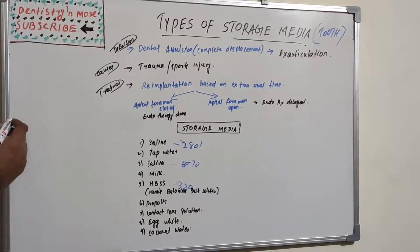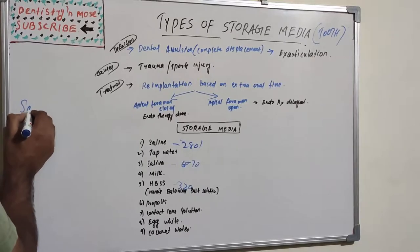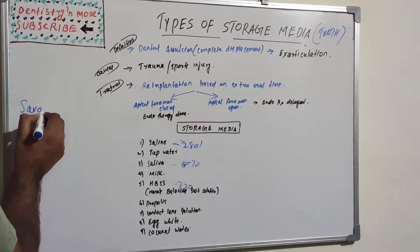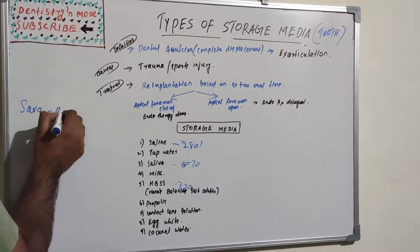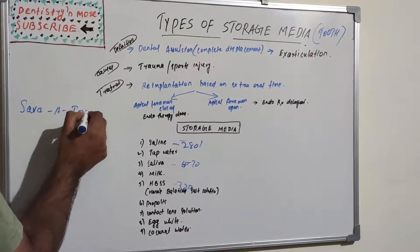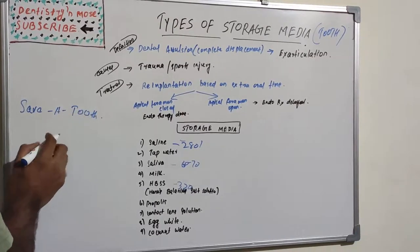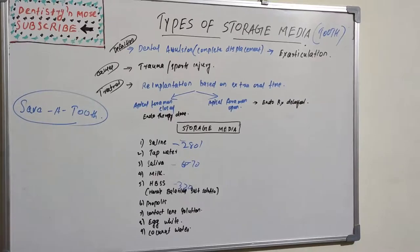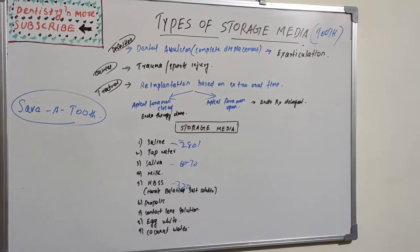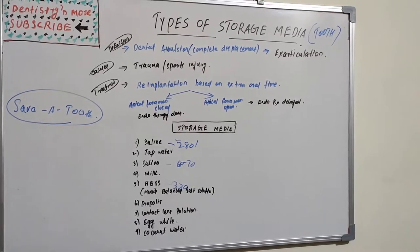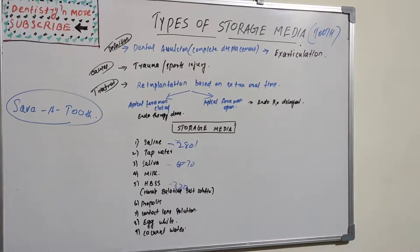And it is now available as a commercial product, that is Save-A-Tooth. So in this product name it is available. So it is the most commonly used storage media. We cannot say exactly commonly used, but it is the most apt one - Save-A-Tooth or HBSS.